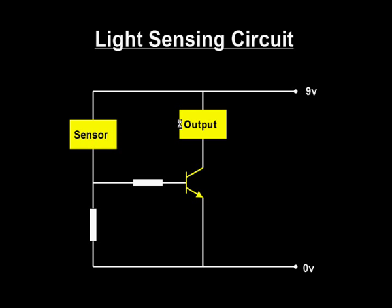Many products use light sensing circuits. For example, lamps that switch on automatically in the dark, cameras with light meters, alarms that go off when the beam of light is broken, and so on.